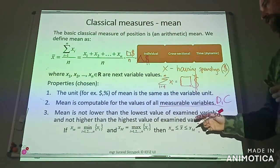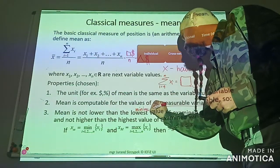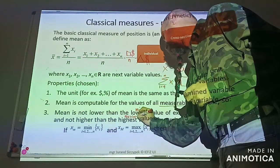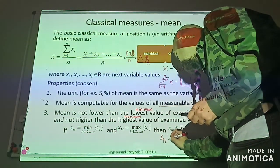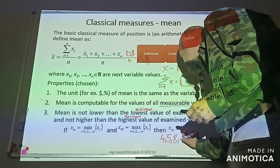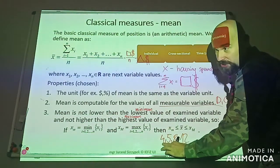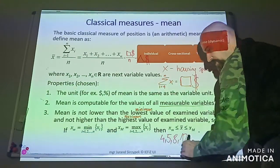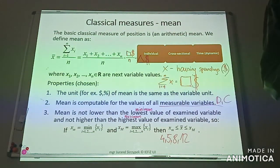The third property: mean is not lower than the lowest value, or minimum value of examined variable, and not higher than the maximum value of the examined variable. It's logical. So if we have an individual series like 4, 5, 8, 12, for sure arithmetic mean is somewhere between 4 and 12, including 4 and 12. We can compute it and at this moment we are sure that mean is somewhere between these two values. The proof of that is very simple.